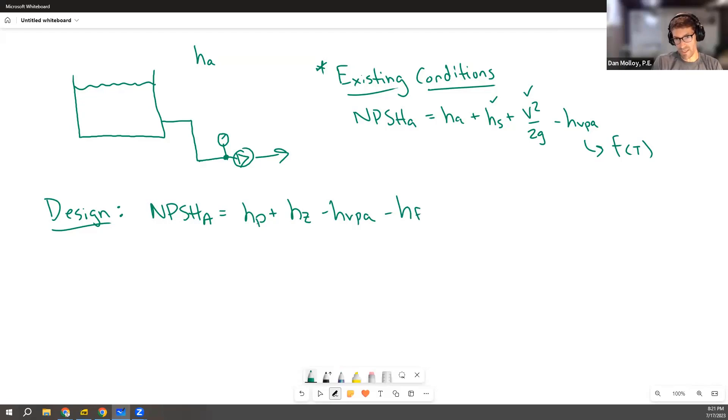NPSHA equals HP plus HZ minus HVPA minus HF. So HP is the same as the atmospheric pressure. So HP equals HA, except we don't know what the actual conditions are going to be in the application. So it could be that this is a sealed box and it's pressurized, in which case HP would be different than HA. But if it's just an open reservoir, then HP is just the pressure that's pushing down on the top of the reservoir, which is the pressure of the atmosphere.